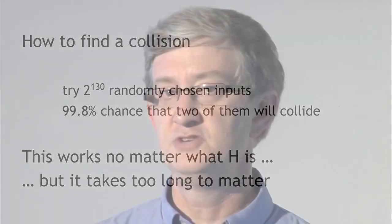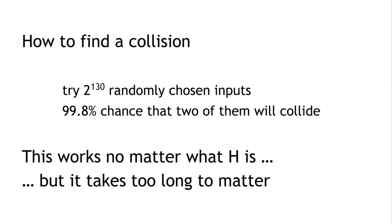This method works no matter which hash function we're using, with 99.8% probability. But it doesn't really matter, because this procedure takes 2 to the 130 steps. We can say that if every computer ever made by humanity was computing since the beginning of the entire universe up to now, the odds that they would have found a collision is still infinitesimally small — far less than the odds that the Earth will be destroyed by a giant meteor in the next two seconds. So we know how to find a collision, but this method takes too long to matter.